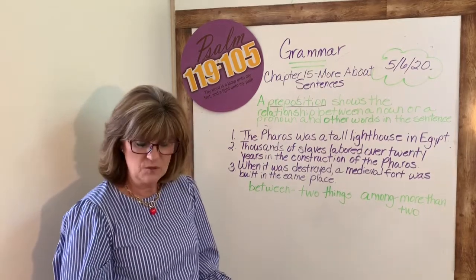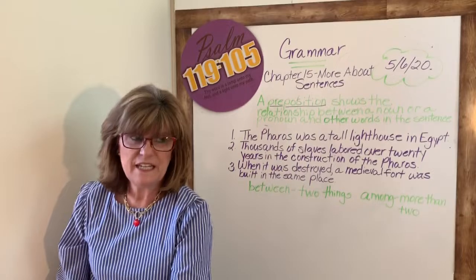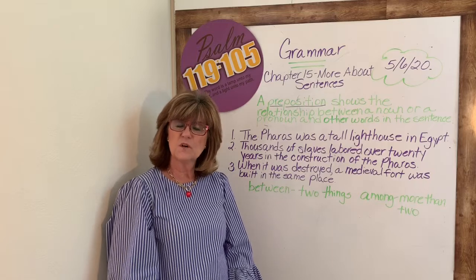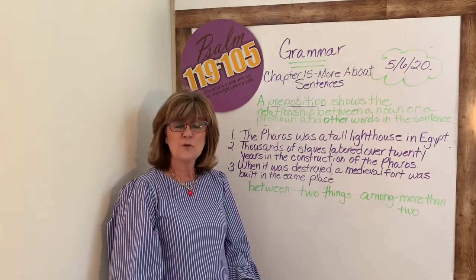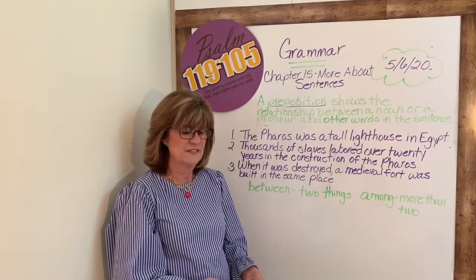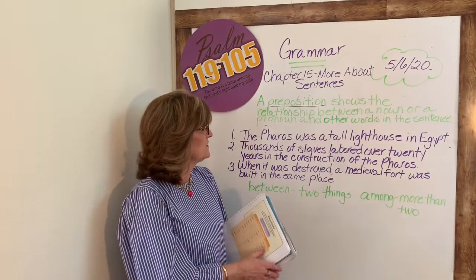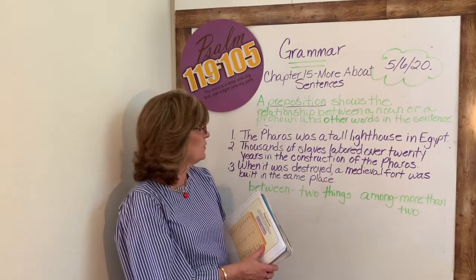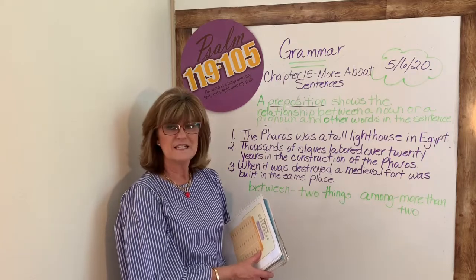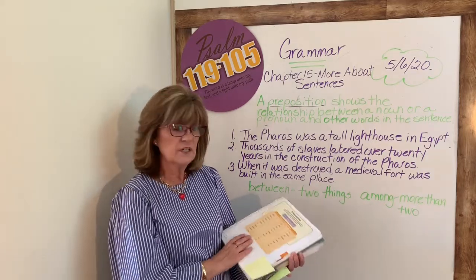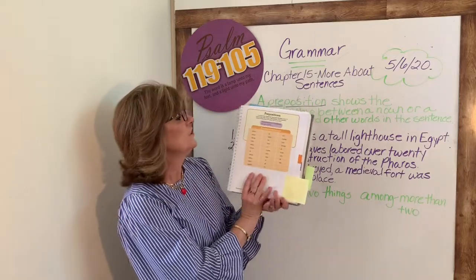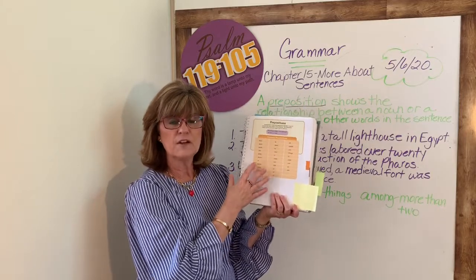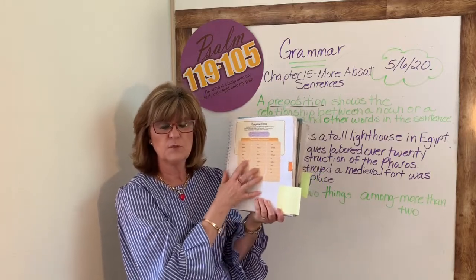So we're going to go on with chapter 15, more about sentences. We're going to be looking at prepositions. I know we've done some work with prepositions already this year, but we're going to go into that a little bit more in depth in this chapter. Remember, the definition of a preposition is that it shows the relationship between a noun or a pronoun and other words in the sentence. If you'll look in your book on page 355, you'll find the list of prepositions, so it'd be good to go back over that page as we go through this chapter.